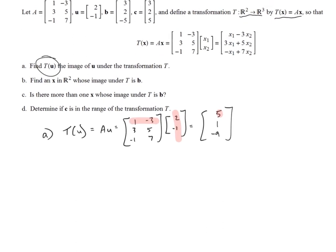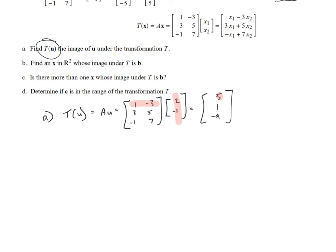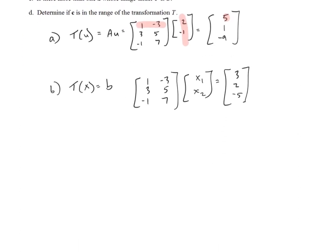Now, moving on to part B, it says find an X in R2 whose image under T is B. Pause, take a second to think how we could do that. But what we really need to do is we need to find a vector X such that T of X is equal to B. So I need to know what vector, if I take my matrix A, 1, negative 3, 3, 5, negative 1, 7, and multiply it by some vector X1, X2, and I produce the vector B, which they give us is 3, 2, and negative 5 as the last entry. Well, augmented matrix, row operations, boom. That's what it boils down to throughout a lot of this chapter.